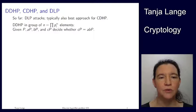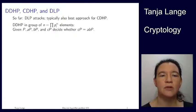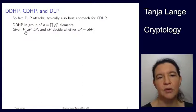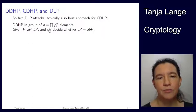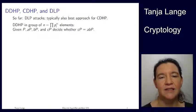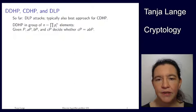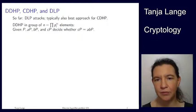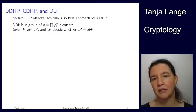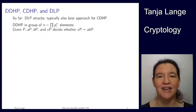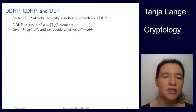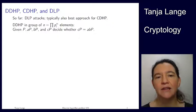Let me remind you what the Decisional Diffie-Hellman problem was. Given the normal Diffie-Hellman setup — a base point, Alice's key, Bob's key, and then a third point — we're talking about Diffie-Hellman triples where there is a candidate point CP. You're supposed to decide whether CP is the shared key between Alice and Bob, or just a random point. The shared key would actually involve running a KDF on it, but let's assume you're getting the pure problem — you're actually getting the CP.